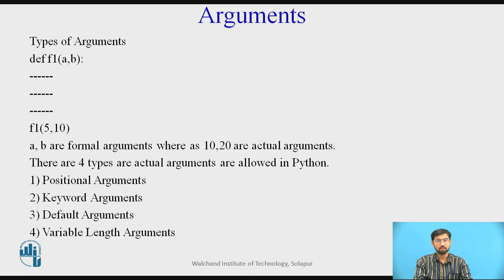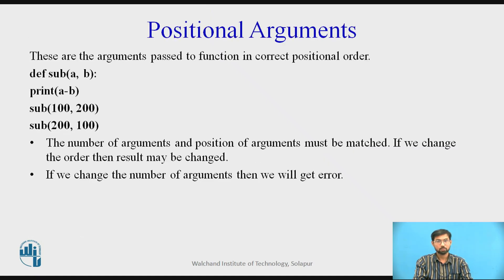Let us move ahead with positional arguments. These are the arguments which are passed in a function in correct positional order. That means sub(a, b) for subtraction, we are printing a minus b. Sub(100, 200) and sub(200, 100). The number of arguments and positional arguments must be matched.